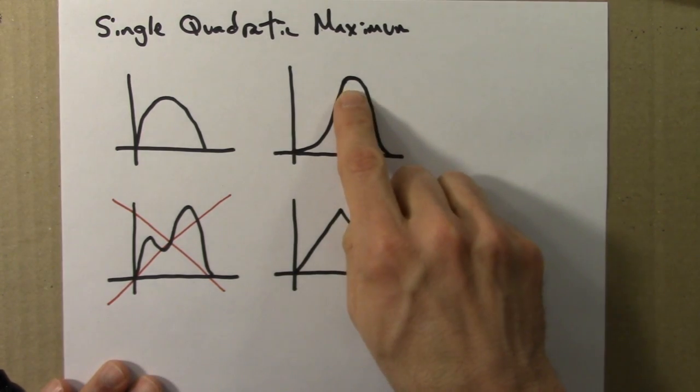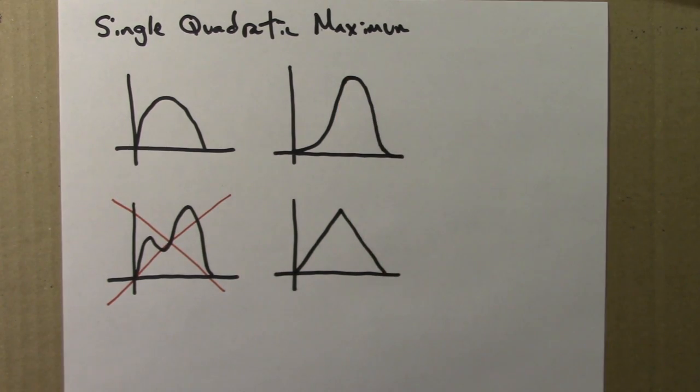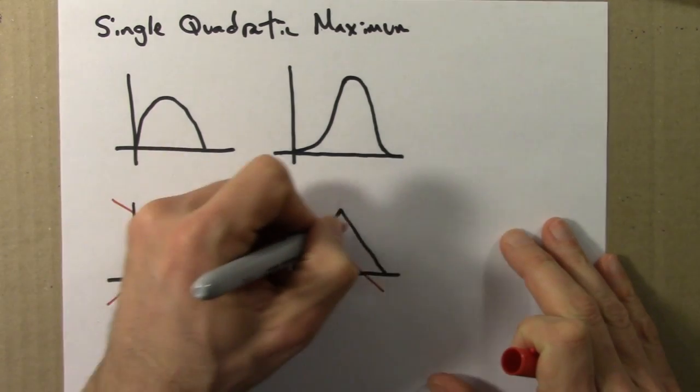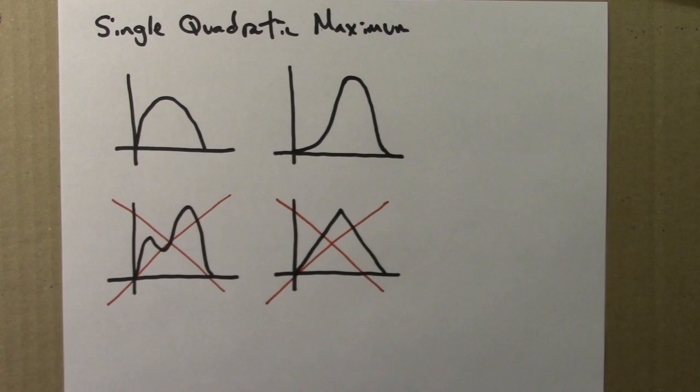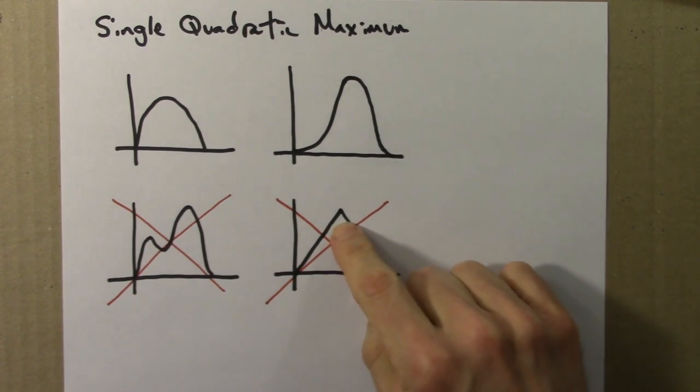Here, if you zoom in on this, you can make it look as close to a parabola as you wish. So this does not have a single quadratic maximum because it has a maximum, but it's not quadratic. It's pointy.